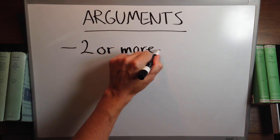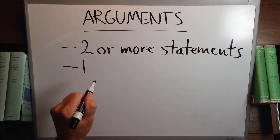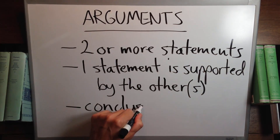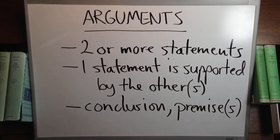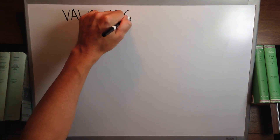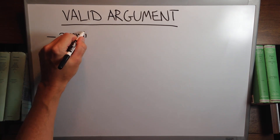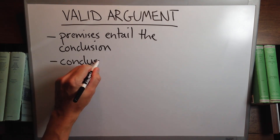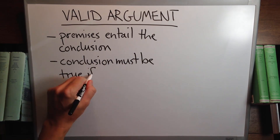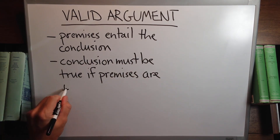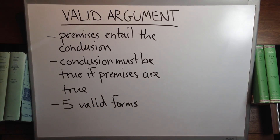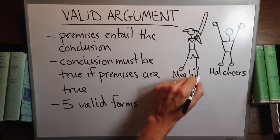So let's look at what an argument is. It's two or more statements in which one of the statements is supported by the other statement or statements. That statement is the conclusion. The ones that support are called the premises. A valid argument is one in which the premises entail the conclusion — in other words, the conclusion must be true if the premises are true.